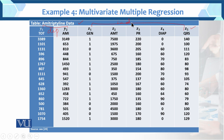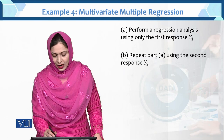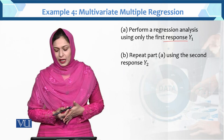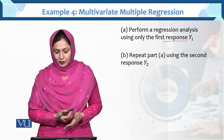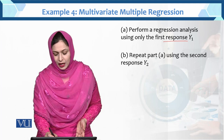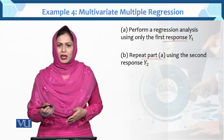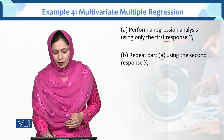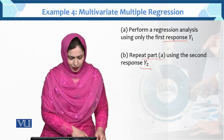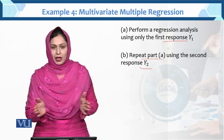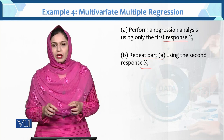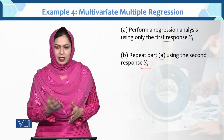Data has been taken from the book and what we need to do: first, perform a regression analysis using only the first response Y1. Second, repeat part A again but now with Y2 as the response variable. So we need to fit a regression model — if we fit it combined, it becomes multivariate multiple regression; if we fit it separately, it becomes a simple linear regression model.